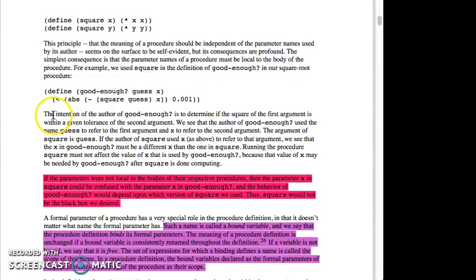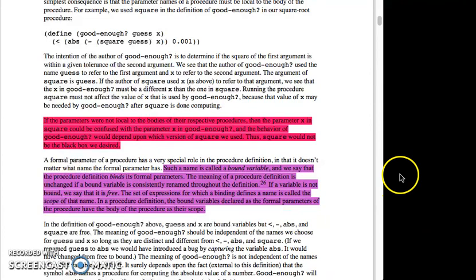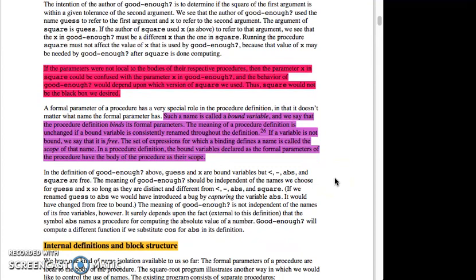The intention of the author of good enough is to determine if the square of the first argument is within a given tolerance of the second argument. We see that the author of good enough used the name guess to refer to the first argument and x to refer to the second argument. The argument of square is guess. If the author of square used x as above to refer to that argument, we see that the x in good enough must be a different x than the one in square. Running the procedure square must not affect the value of x that is used by good enough, because that value of x may be needed by good enough after square is done computing. If the parameters were not local to the bodies of their respective procedures, then the parameter x in square could be confused with the parameter x in good enough, and the behavior of good enough would depend upon which version of square we used. Thus, square would not be the black box we desired.